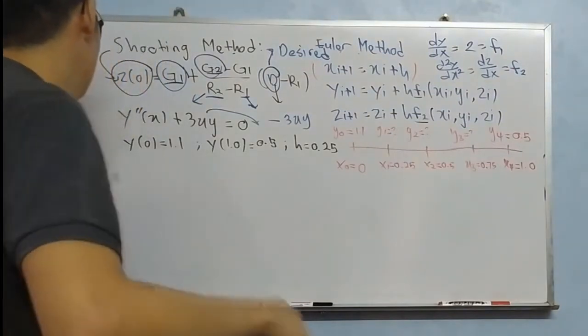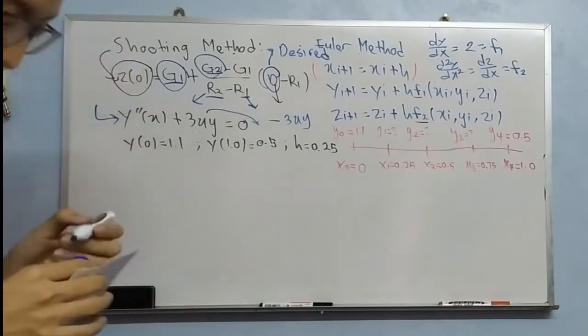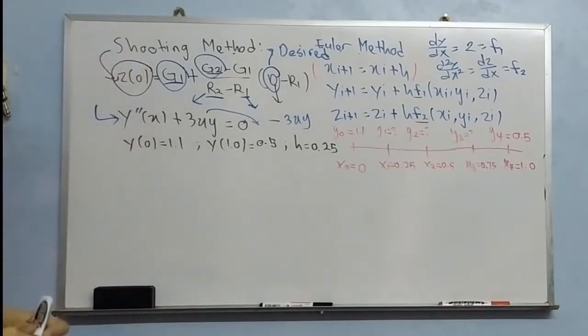So now let's look at the equation. Y'' plus 3xy equals to zero. So what is Y''? Generally it means d²y over dx².